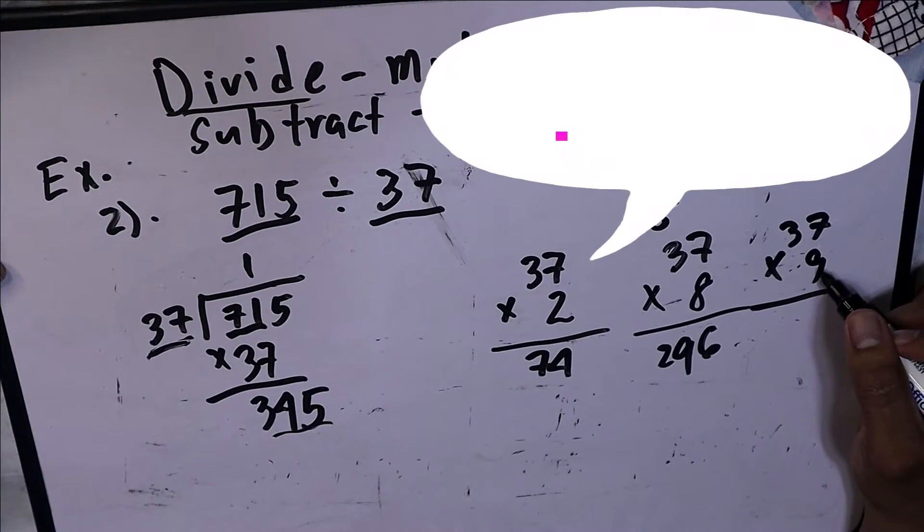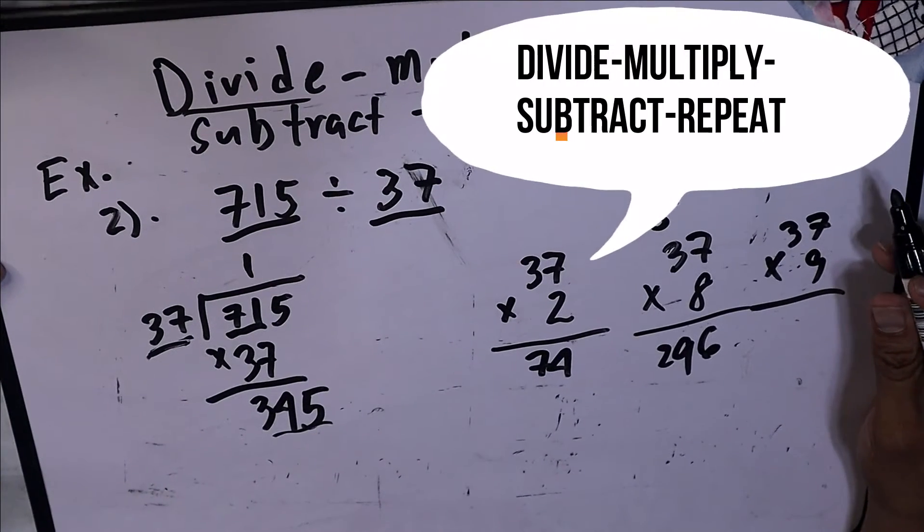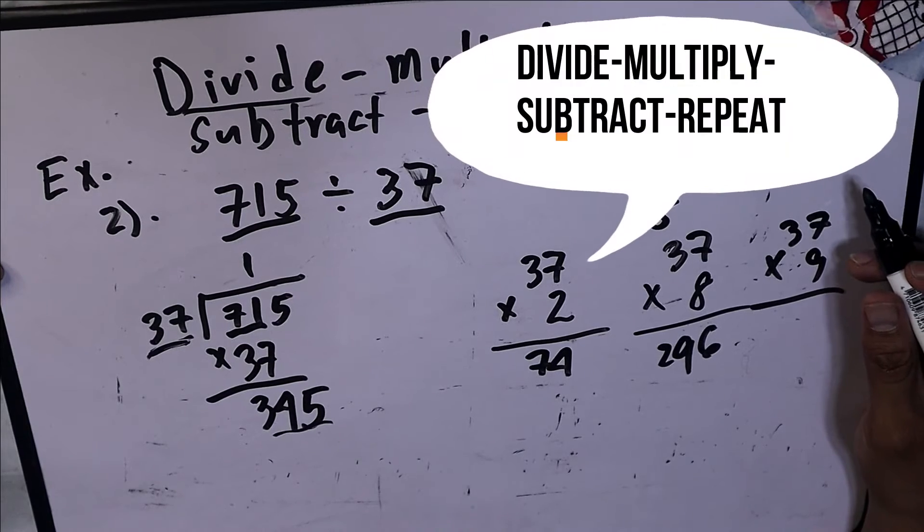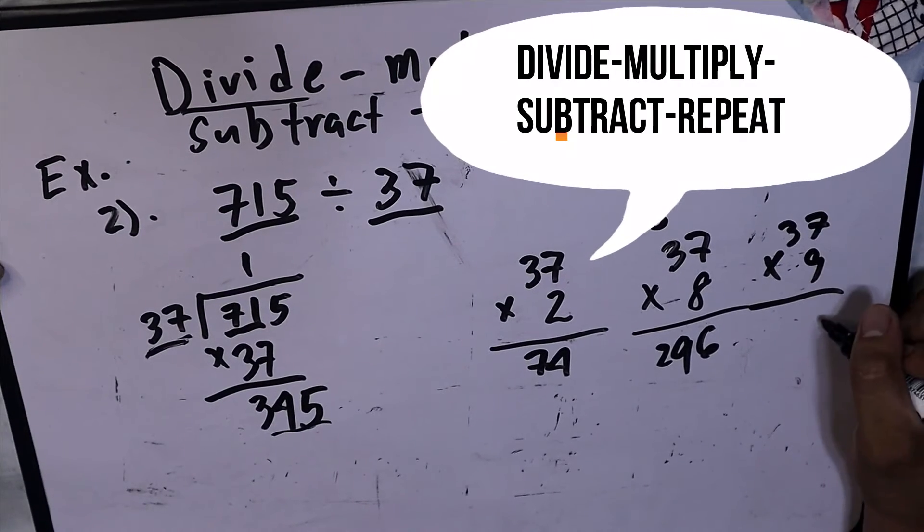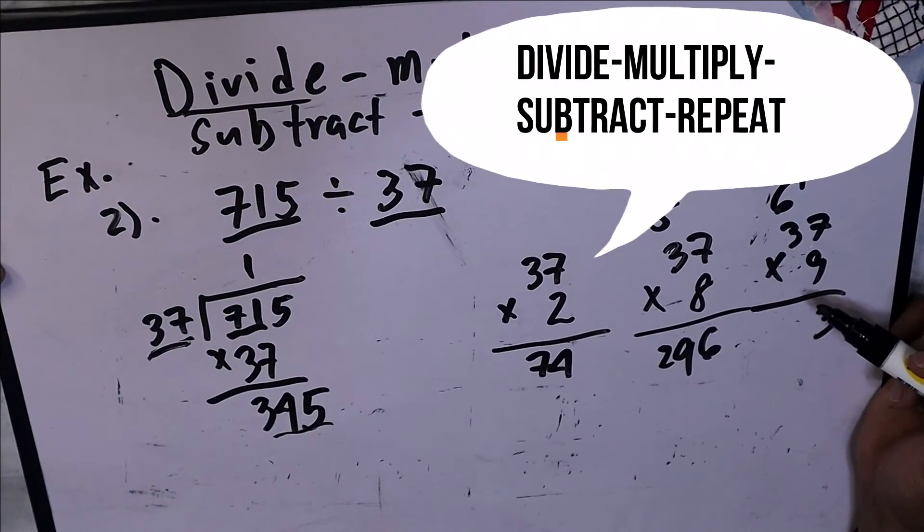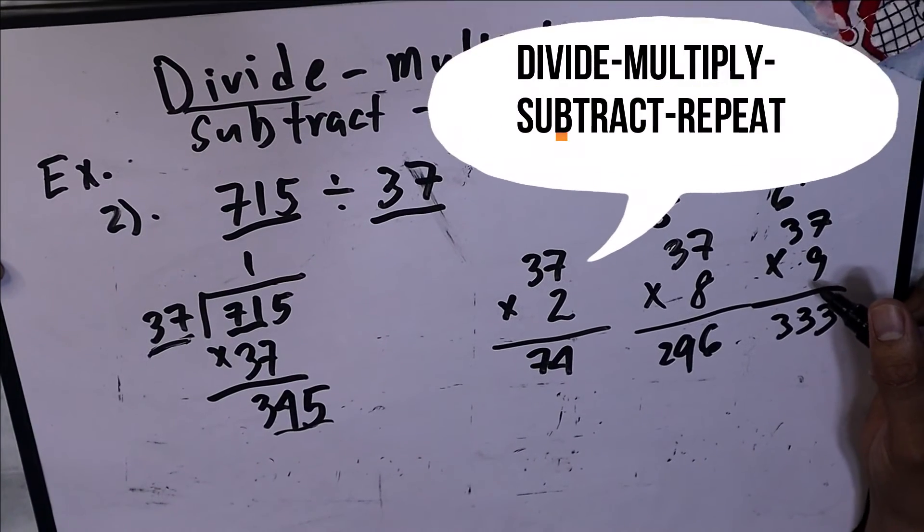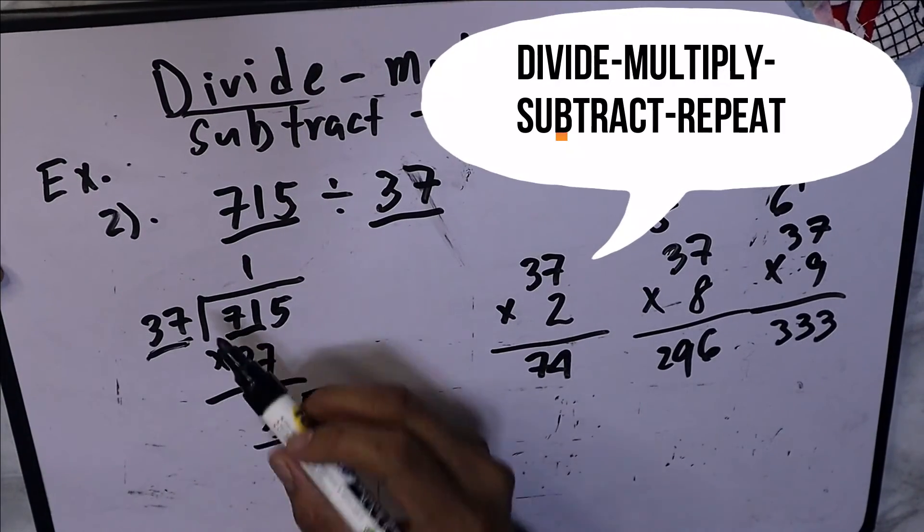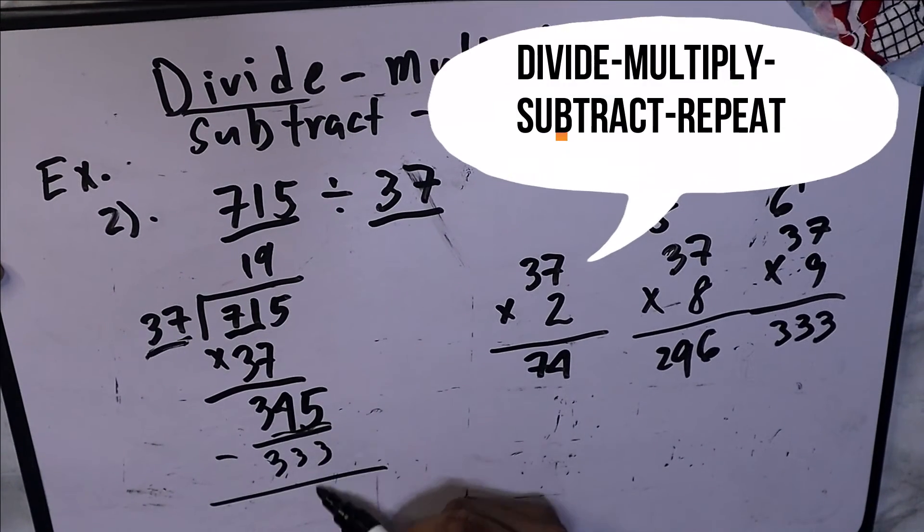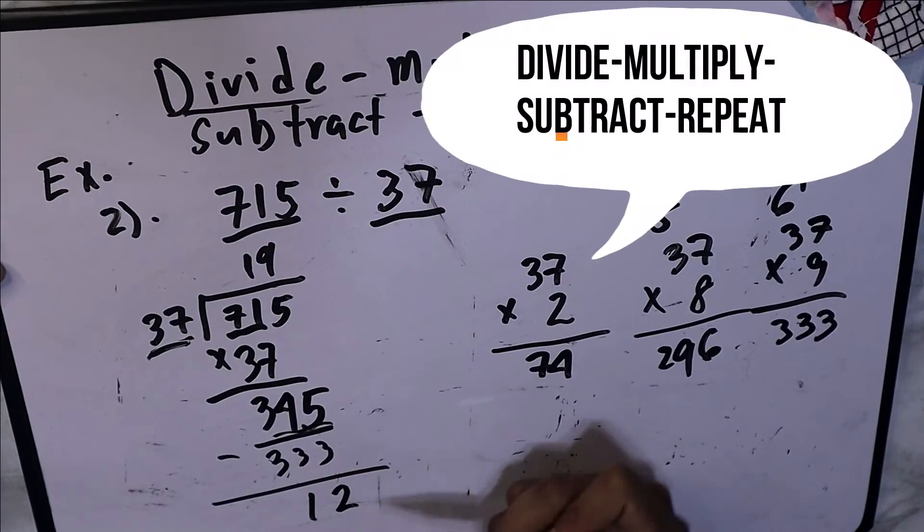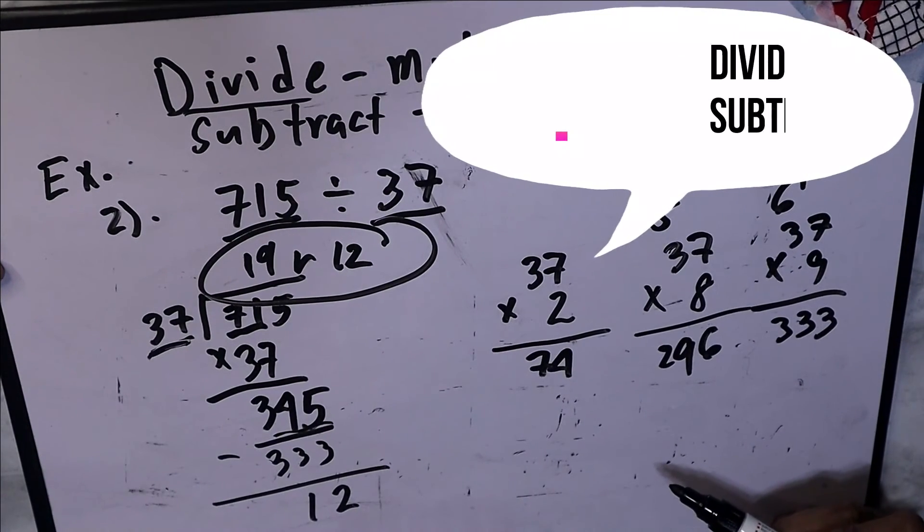9 times 7 is 54. Is it 54, students? Of course not. 9 times 7 is 63. 9 times 3 is 27, and 6 is 33. So the answer is 333. If we're going to make it 10, it will be over from 345, so the answer is 9. Then 9 times 37, the next process is 333. 1 and then 2. So the answer is 19 remainder 12. This is our final answer.